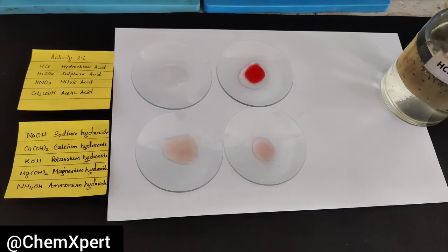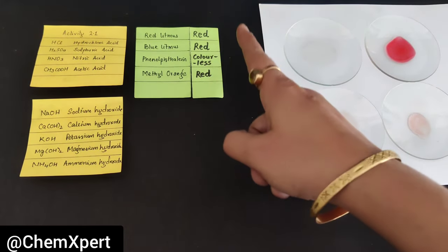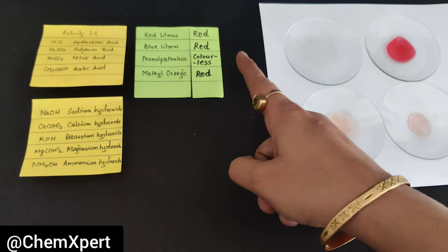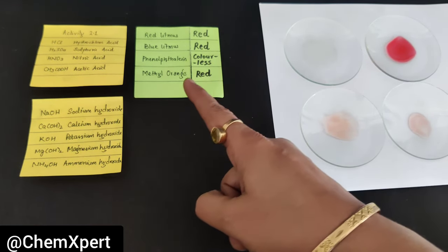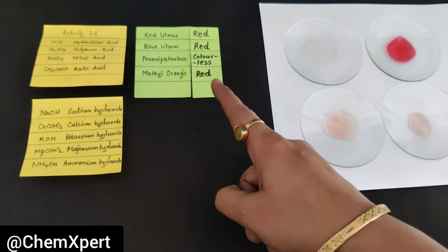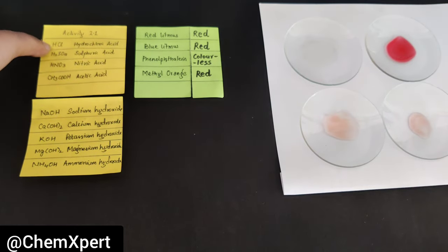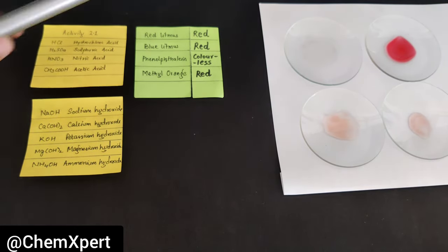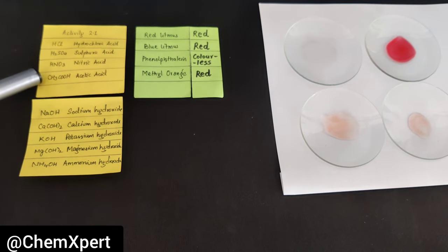So these are the observations: red litmus remains red, blue litmus turns red, phenolphthalein remains colorless, and methyl orange turns red. If we perform this activity with all these acids, the observations will remain the same, because all four examples are acids.